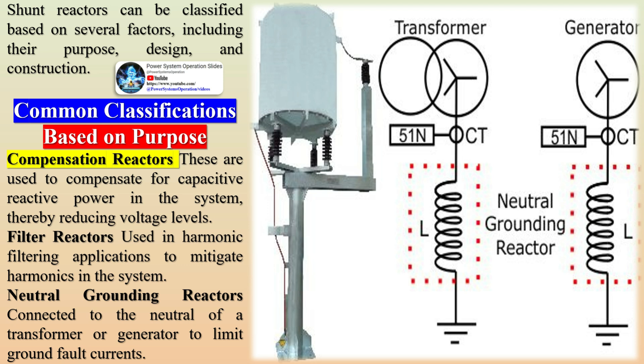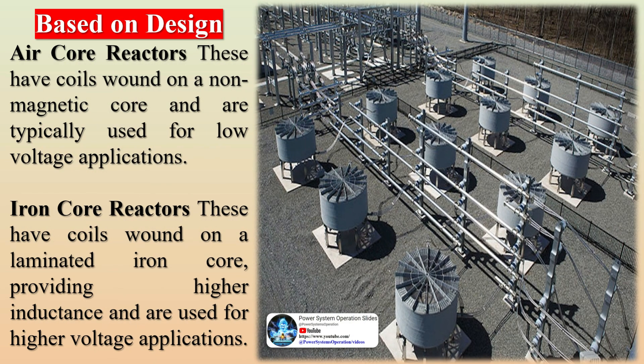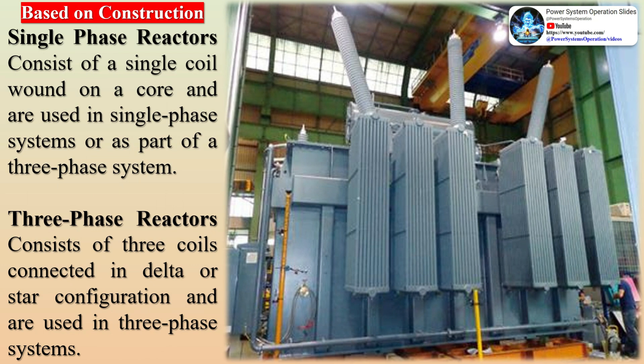The electromagnetic operating principle of a shunt reactor can be explained as follows. When a shunt reactor is connected to a power system and voltage is applied, an initial surge of current flows into the reactor — this is called the charging current — which creates a magnetic field around the reactor coil. The changing current (di/dt) generates a changing magnetic field which, according to Faraday's law of electromagnetic induction, induces a voltage in the coil in the opposite direction to the applied voltage.